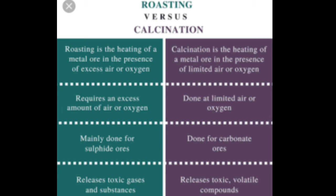What is roasting? The sulfide ores are converted into oxide by heating strongly. In calcination, heating was done with a limited amount of air, but in roasting, excess amount of air must be present. So the sulfide ores are converted into oxide by heating strongly in the presence of excess air, and this process is known as roasting.